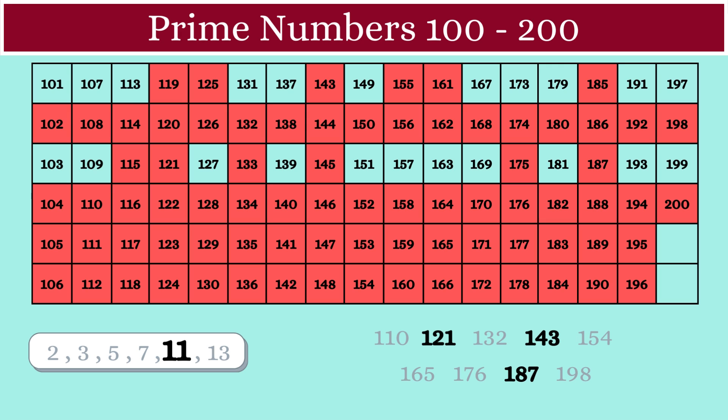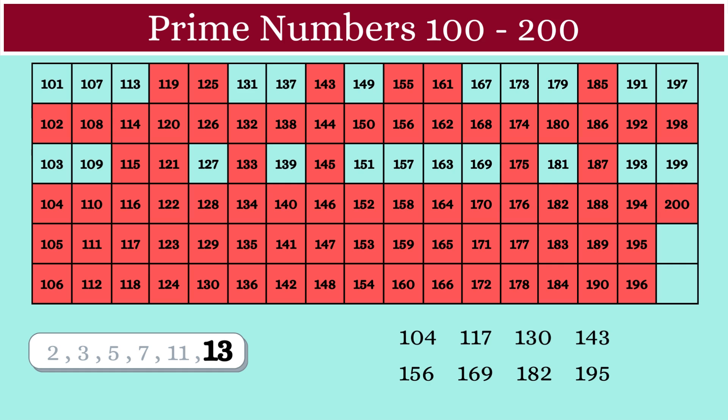Finally, we will consider number 13. The multiples of 13 between 100 and 200 are listed here. Out of these, only 169 is an unmarked number, so we will mark 169 as a composite number.